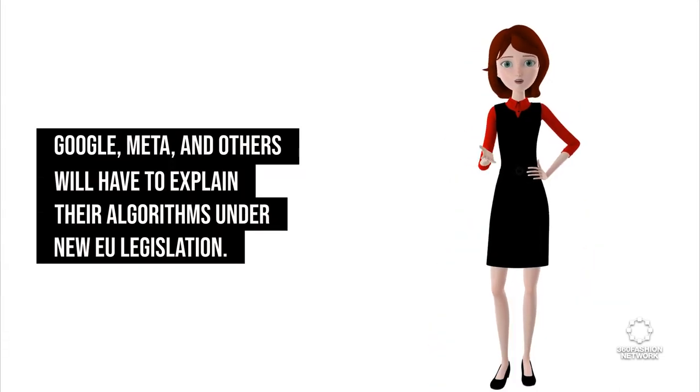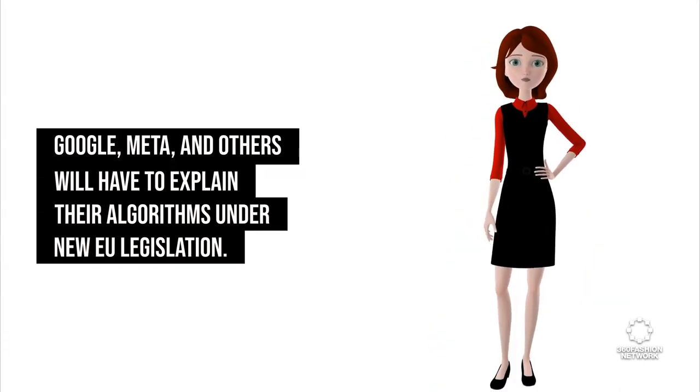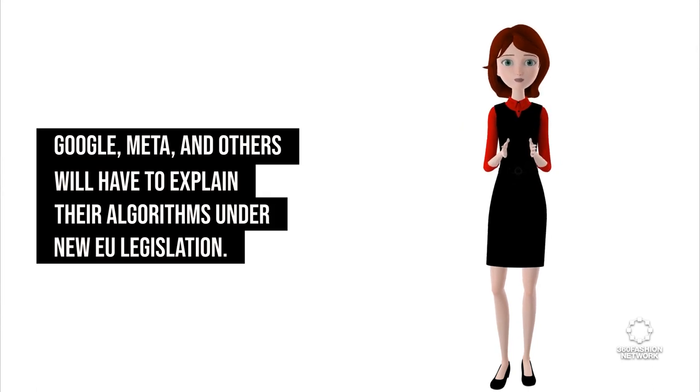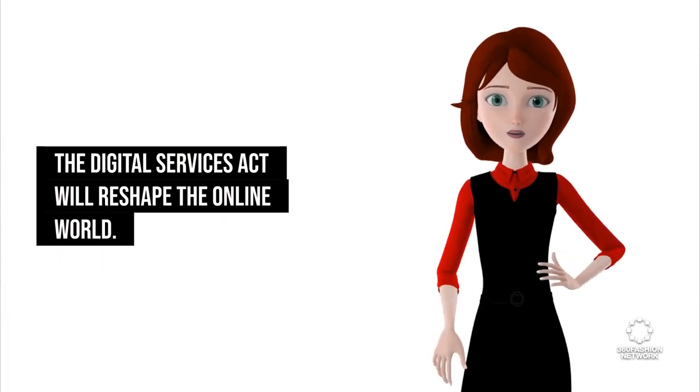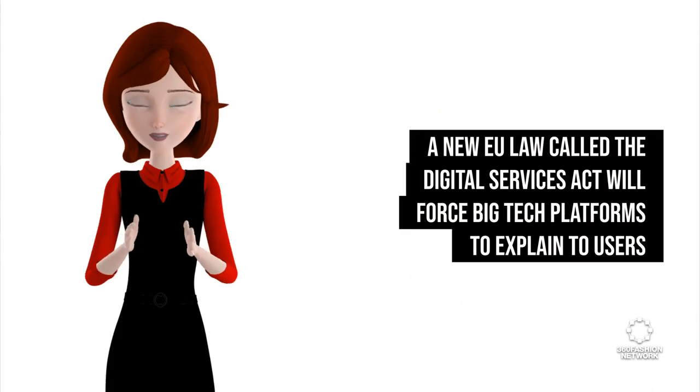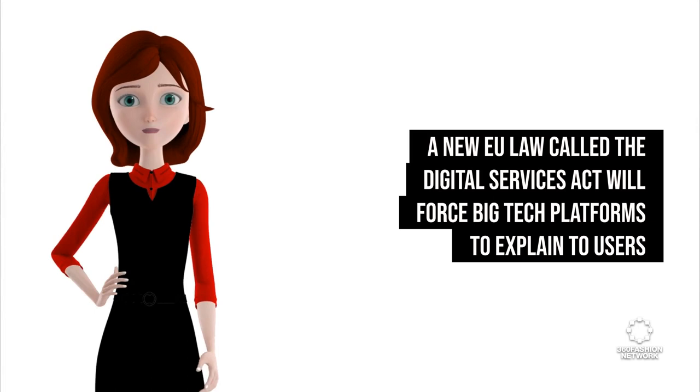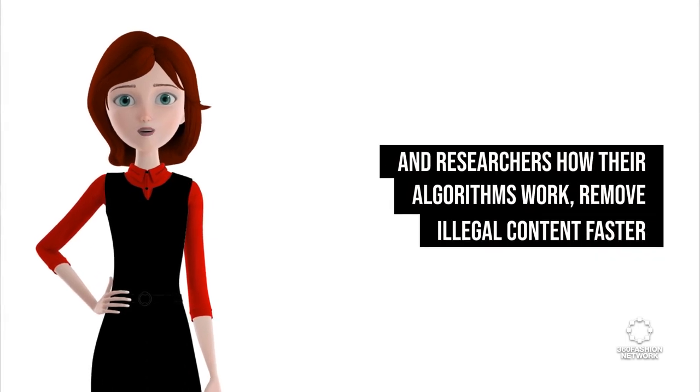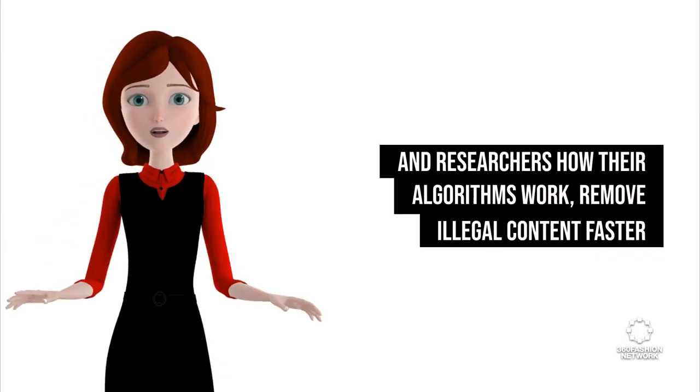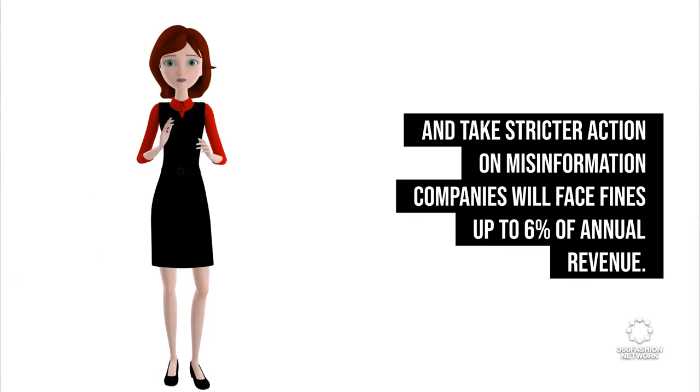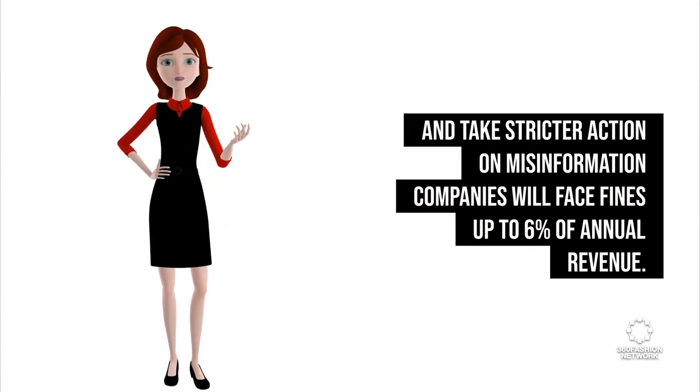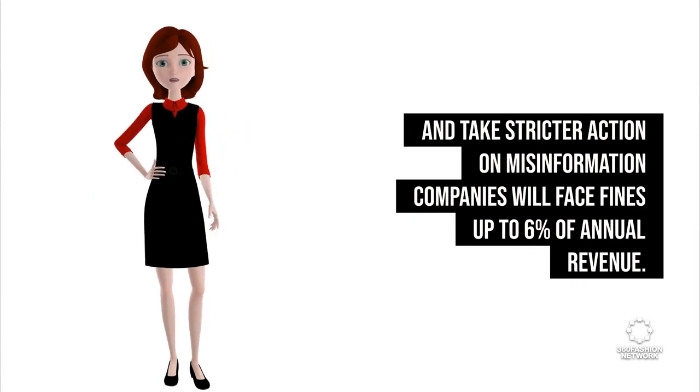Google, Meta, and others will have to explain their algorithms under new EU legislation. The Digital Services Act will reshape the online world. A new EU law called the Digital Services Act will force big tech platforms to explain to users and researchers how their algorithms work, remove illegal content faster and take stricter action on misinformation. Companies will face fines up to 6% of annual revenue.